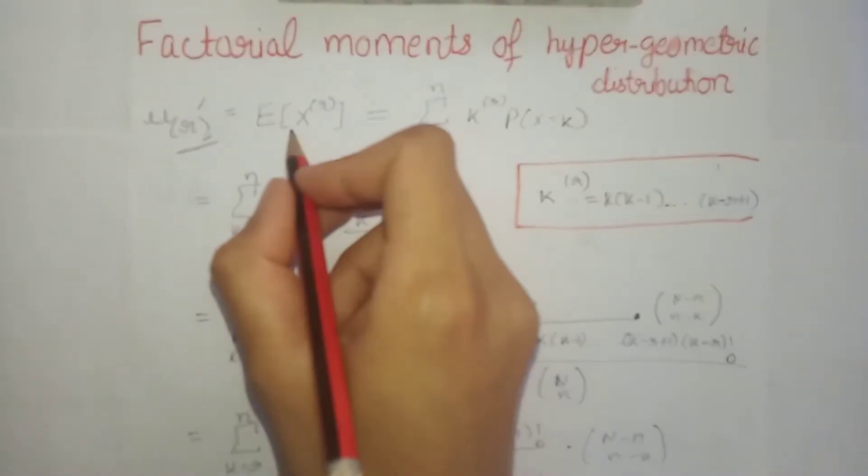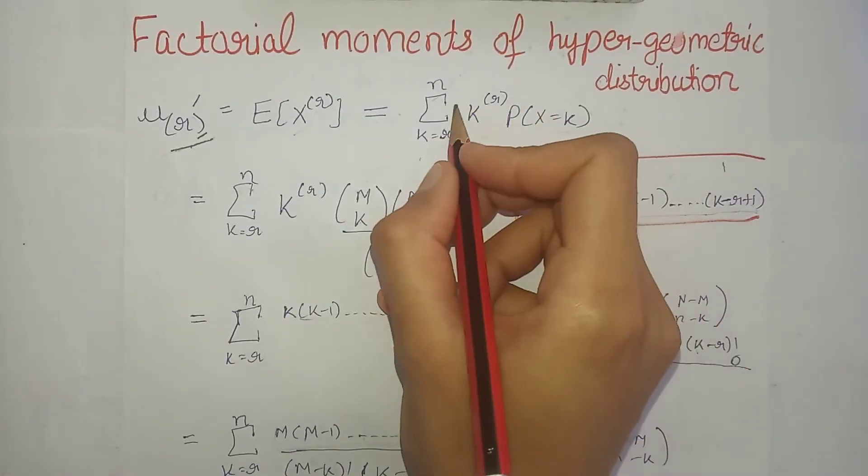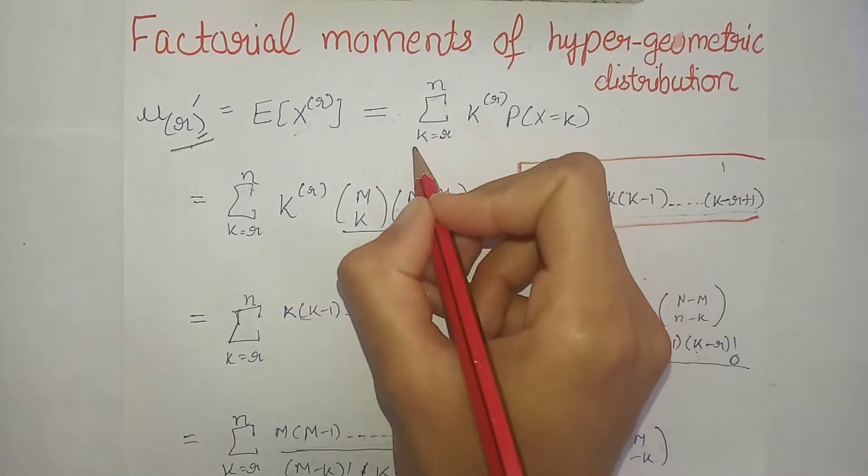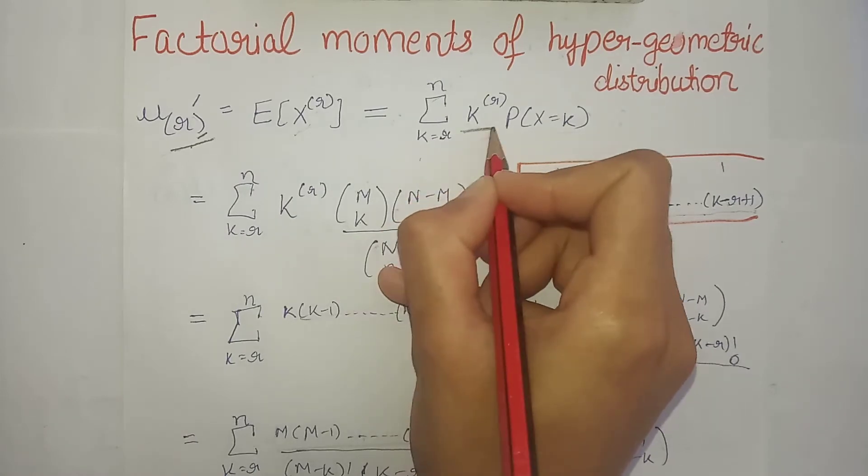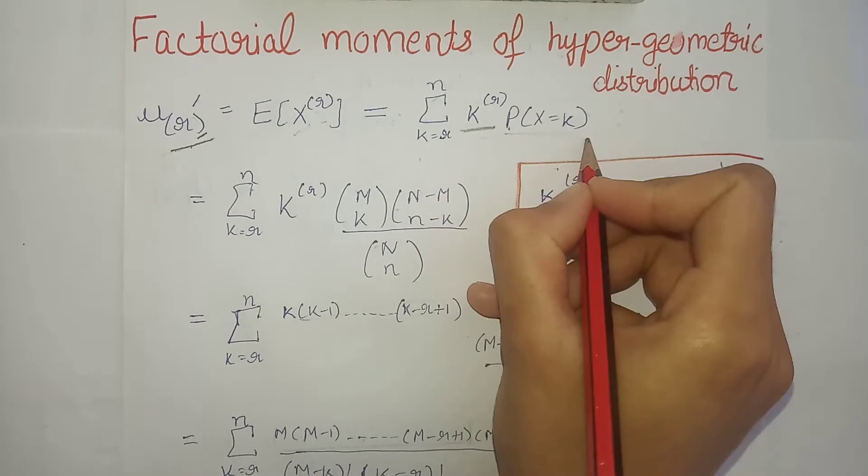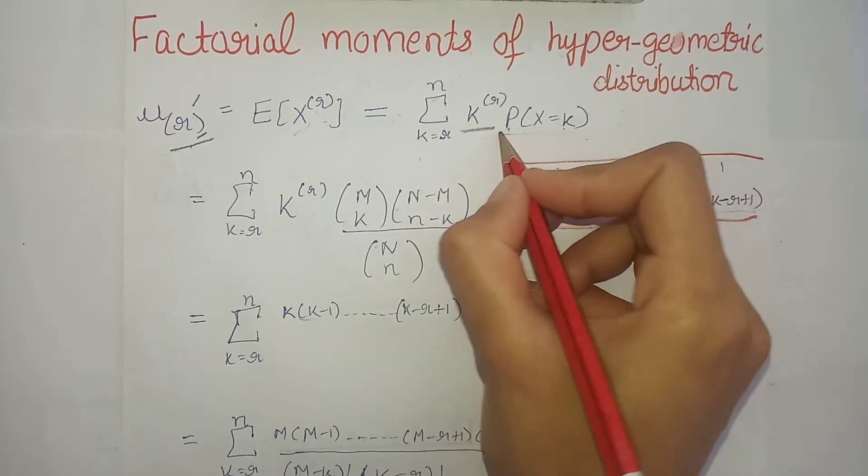This equals the expectation of X raised to power r in parentheses. Now expectation definition is basically summation of all the values of x. Here everywhere we will take k in place of x, along with the probability mass function of x, putting k in place of x in that probability mass function.